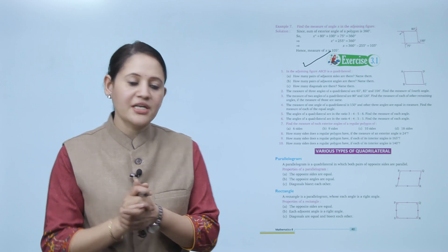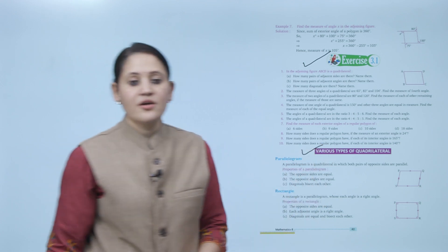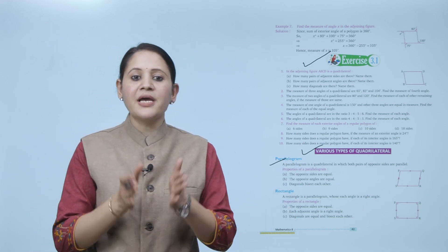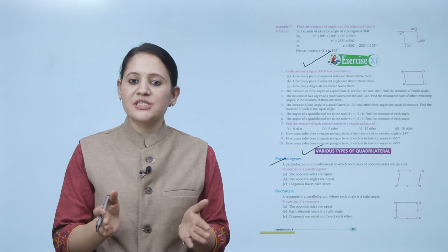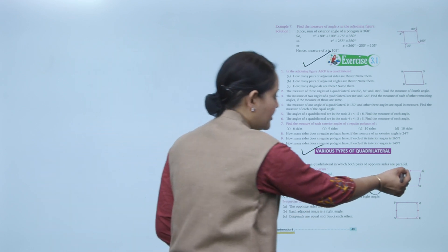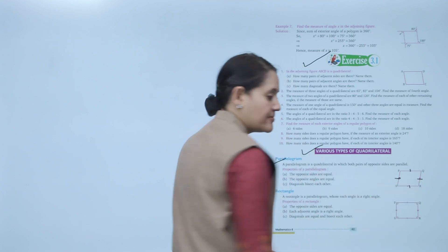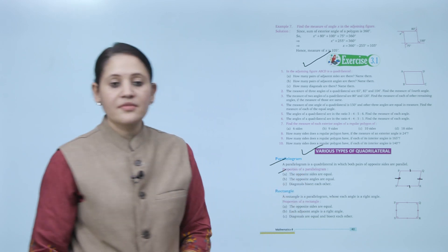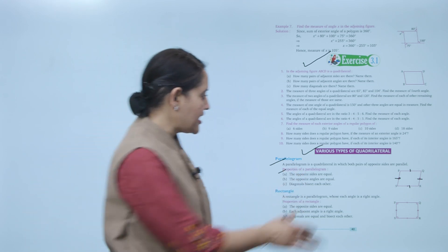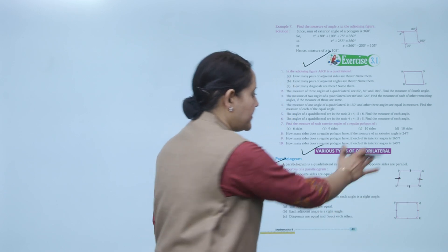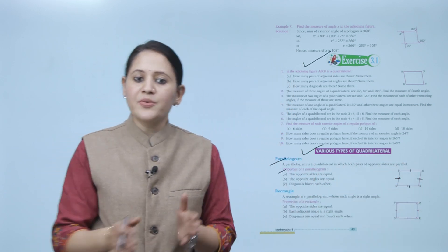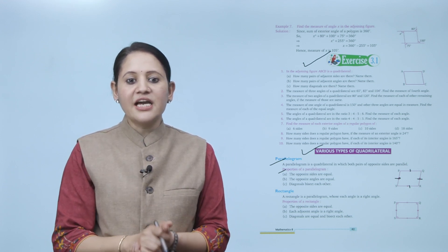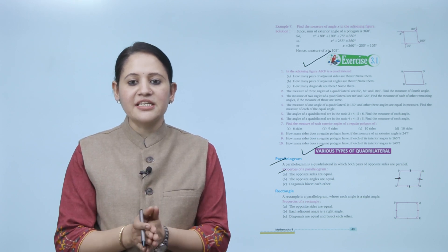We will move to the next topic — various types of quadrilaterals. First is a parallelogram. As the name suggests, a parallelogram is a quadrilateral in which both pairs of opposite sides are parallel. Properties of parallelogram: the opposite sides are equal — PQ and SR are equal, and PS and QR are equal. The opposite angles are equal — angle P and R are equal, and angle S and Q are equal. The diagonals bisect each other.